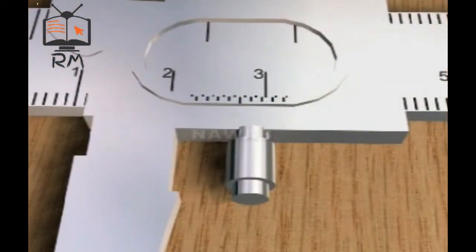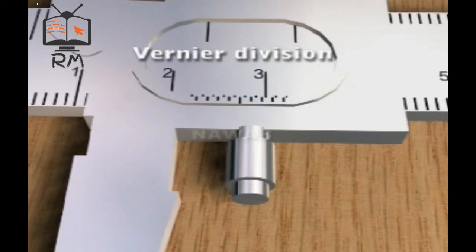The length of Vernier Scale is 9 millimeters and it is divided into 10 equal parts. Each part is called a Vernier Division. The separation between two Vernier lines is 0.9 millimeter.